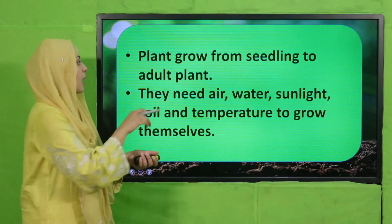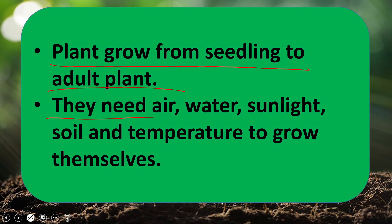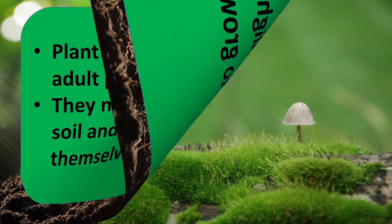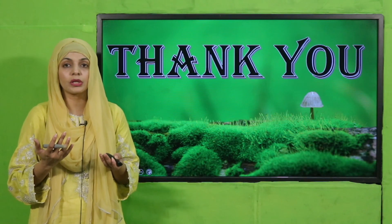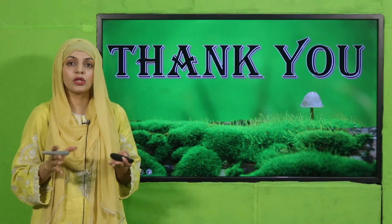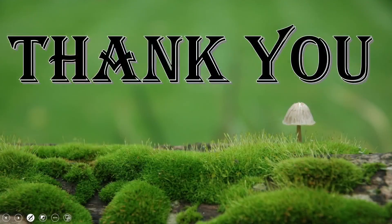Now is the time for wrap up. Today we have learned that plants grow from seedling to adult plants. They need air, water, sunlight, soil and temperature to grow. Hum plants ke baare mein sab kuch padhe hain — aaj aap ko ye bhi pata chal gaya ke plants ko growth ke liye kya kya cheezon ki zaroorat hoti hai. I hope you have enjoyed today's lecture. Keep everybody around you safe. Have a good day. Thank you so much and Allah Hafiz.